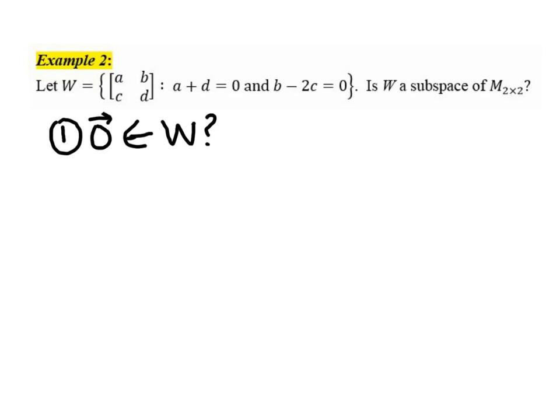I know possibly calling a 2 by 2 matrix a vector might feel a bit unnatural to you, but here we're talking about vectors just as the elements of a vector space. So the objects that are contained in a vector space we refer to as vectors. So the 0 vector in that collection of all 2 by 2 matrices would be just a 2 by 2 matrix whose entries are all 0. And so what we would want to check is does this matrix satisfy these conditions so that it belongs to W.